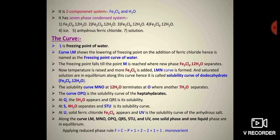Along curves LM, MNO, OPQ, QRS, STU, and UV, one solid phase and one liquid phase are in equilibrium. Applying the reduced phase rule: F = C − P + 1 = 2 − 2 + 1 = 1. Hence, all these curves are monovariant.